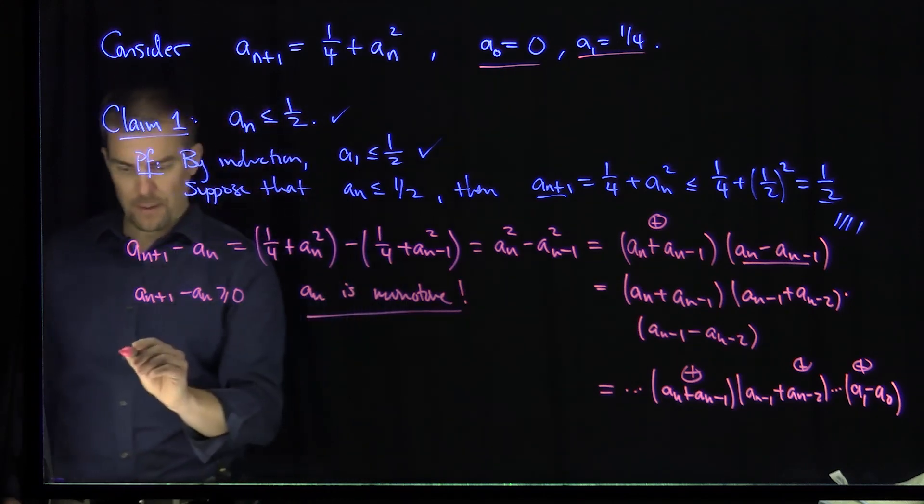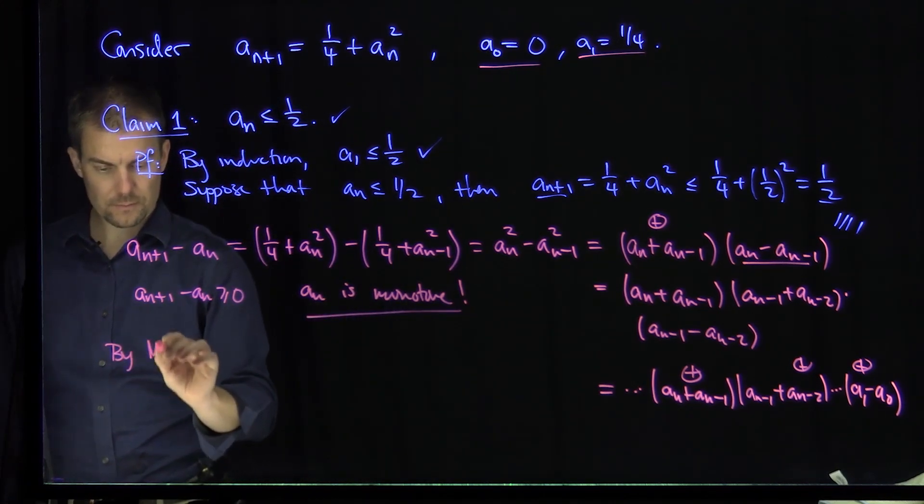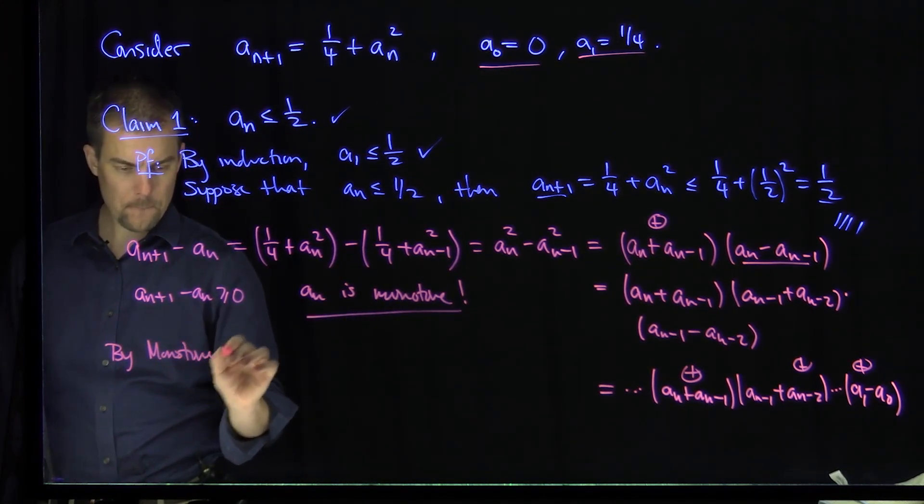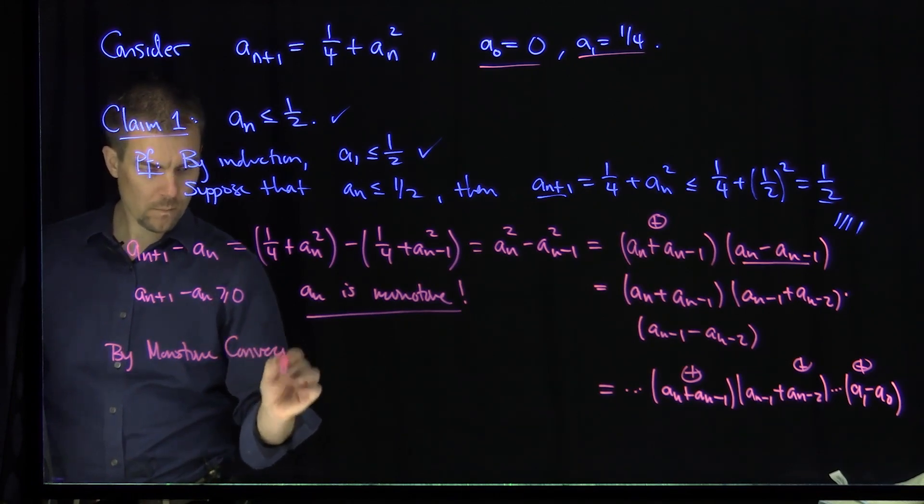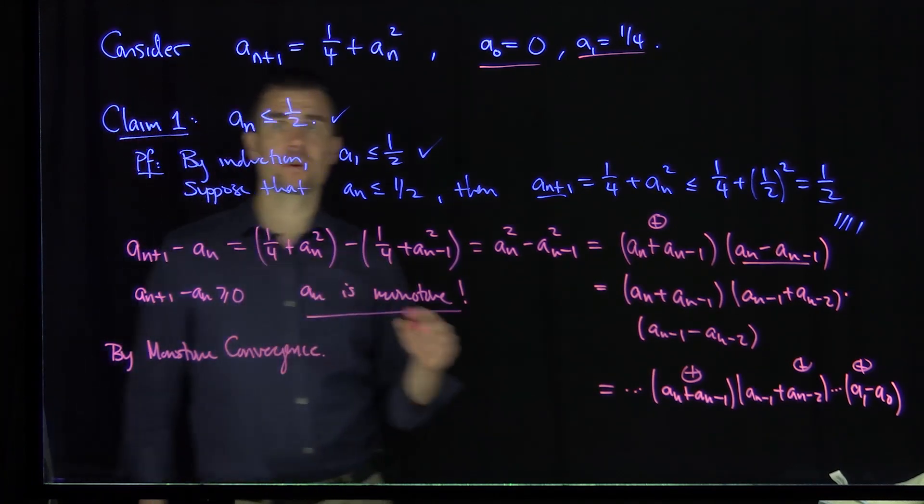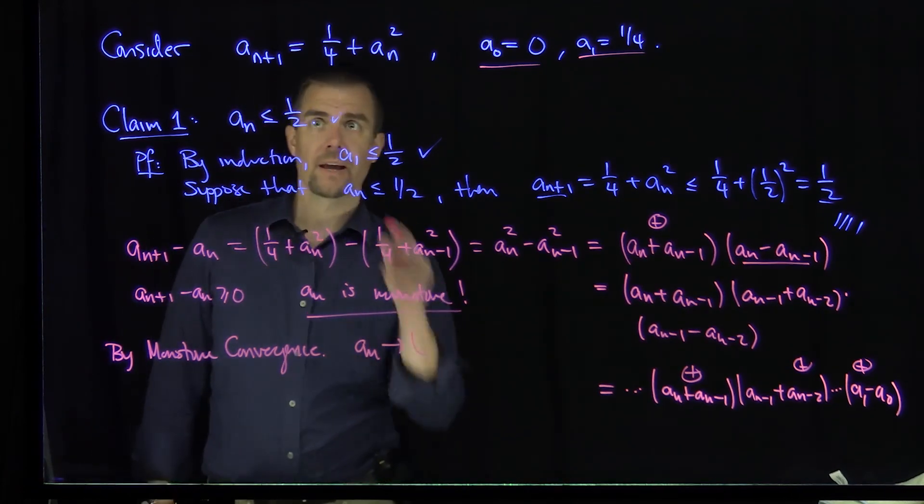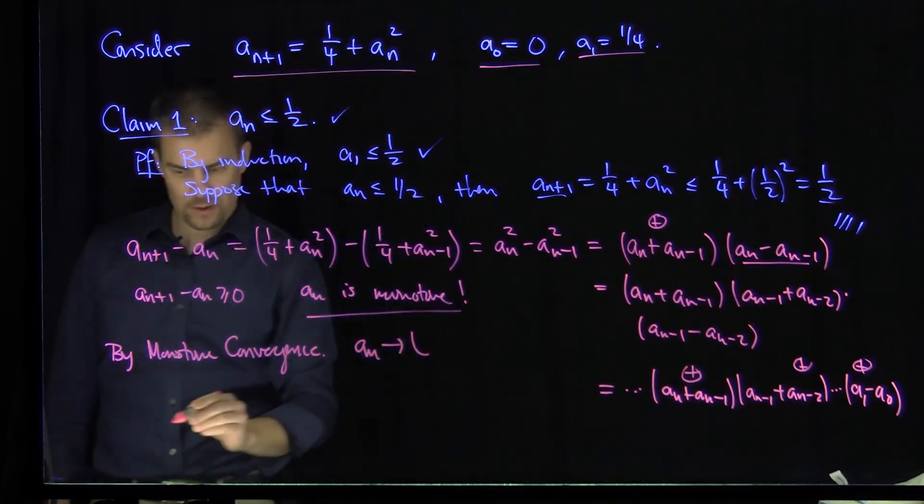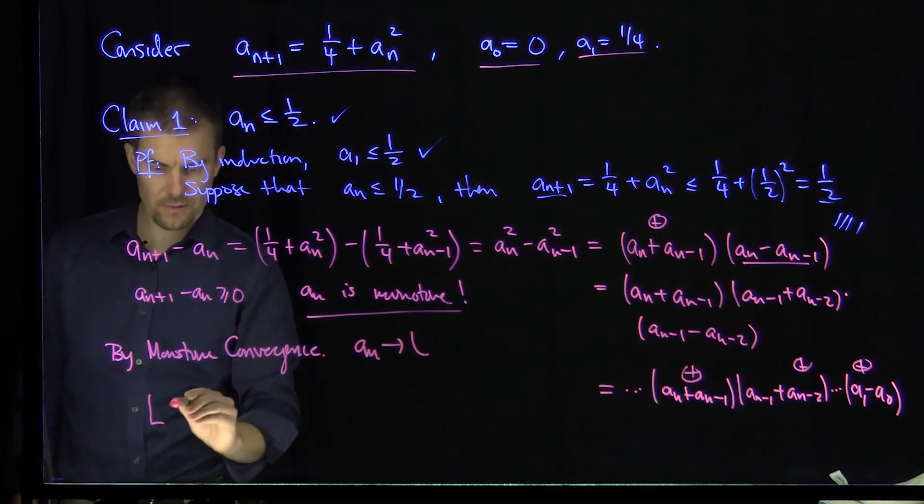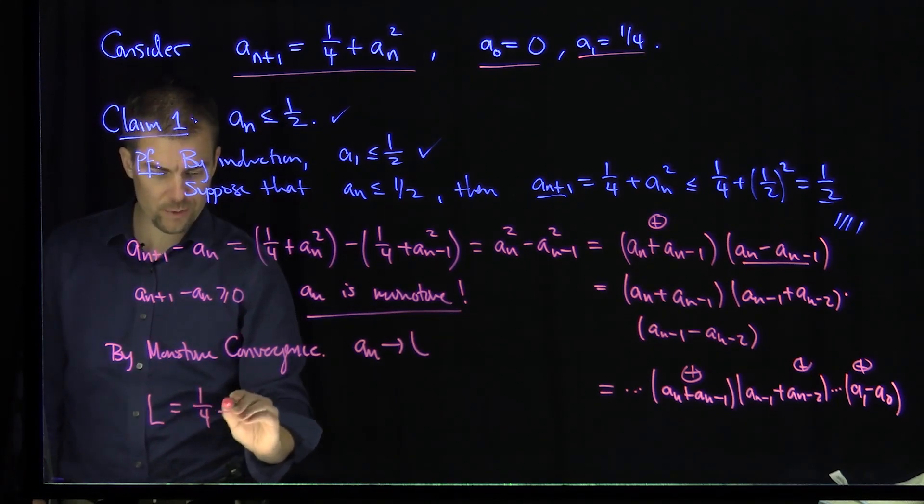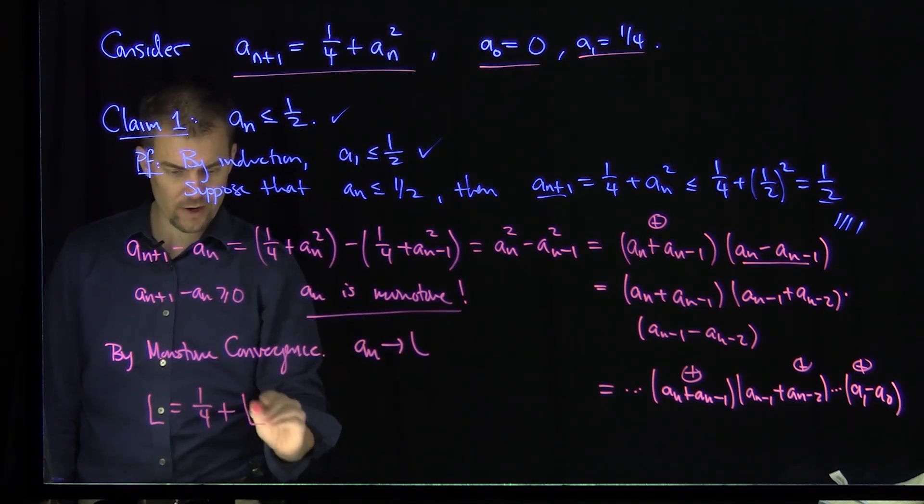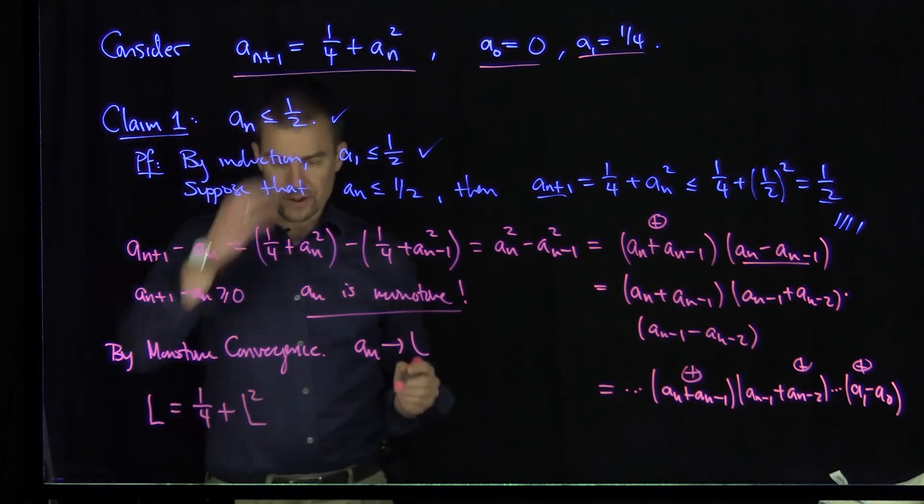Now I can use the monotone convergence theorem. So by monotone convergence, a_n converges to a limit L. And how do I find that L? Well, I can use this recursion, because the left-hand side is going to converge to L. This will converge to 1/4. By algebraic properties of limits, that will converge to L^2. And so we have this relationship over here.